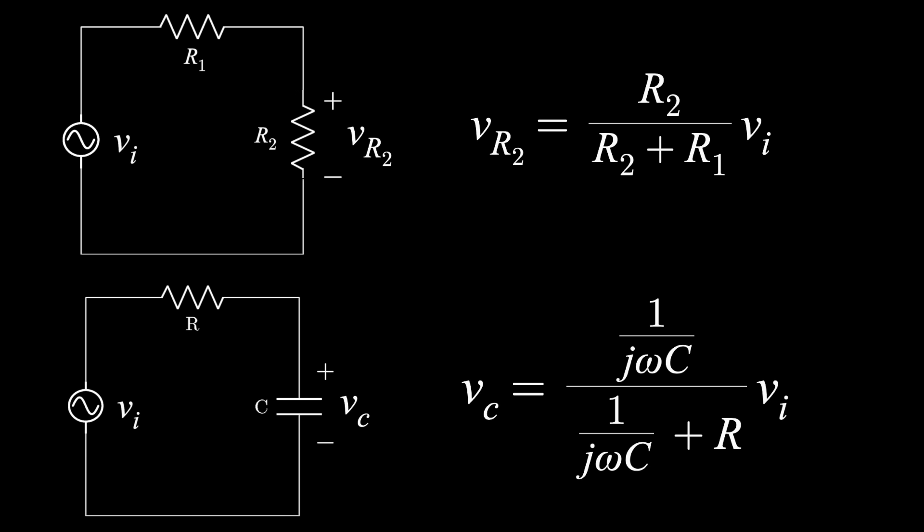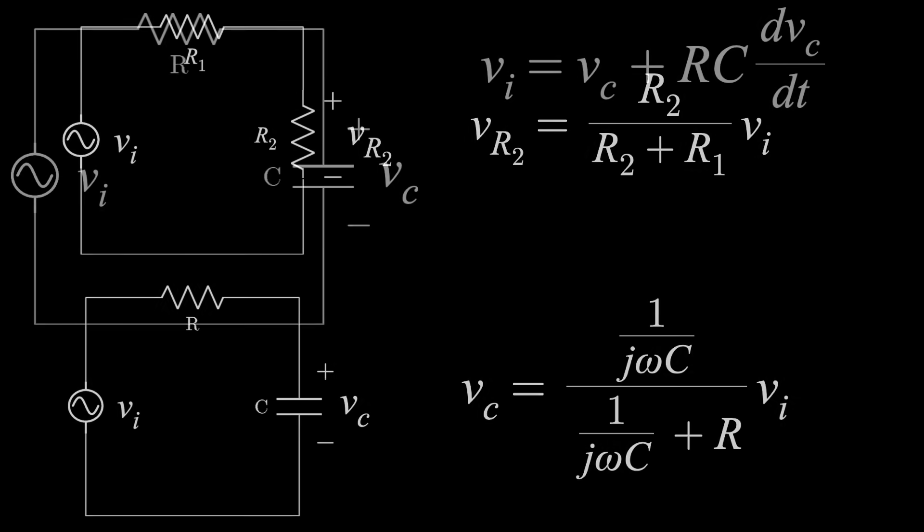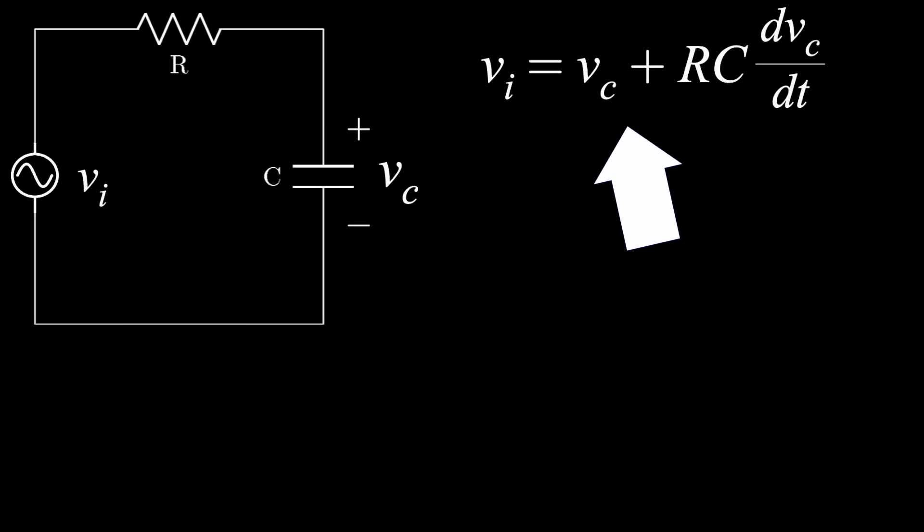And while this is all useful for sinusoidal inputs, when you have anything else, the math actually still works for the most part, because all functions can be made up of sinusoids. It's beyond this video, but if you apply the Fourier transform to both sides of this equation, or the capacitor/inductor equations, you get the same impedances and voltage dividers as before — you would just have to do inverse transforms at the end to get an actual solution.